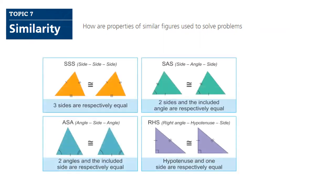Topic seven is about similarity. We took congruence and we will take similarities. How are properties of similar figures used to solve problems? Also, we will discuss or focus on the similarity of triangle. So we have to differentiate between similarity and congruence.